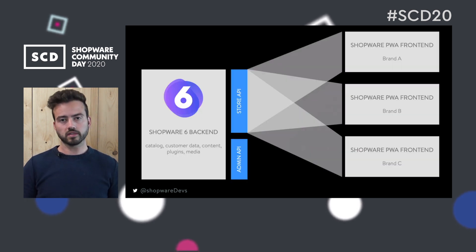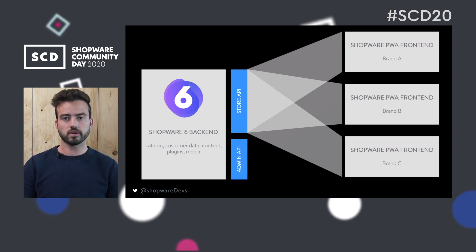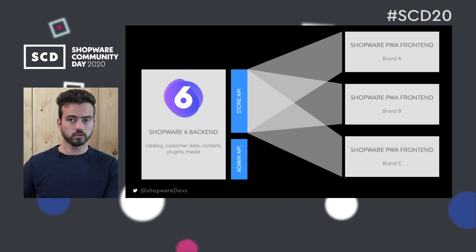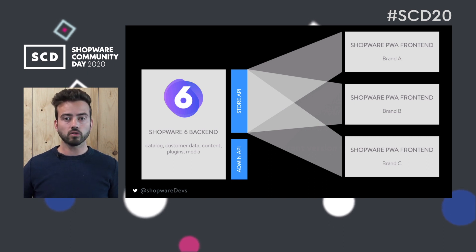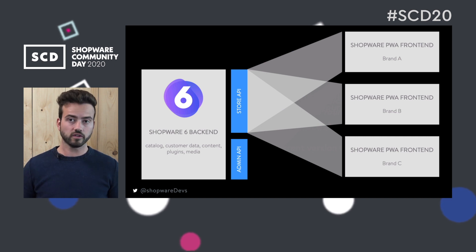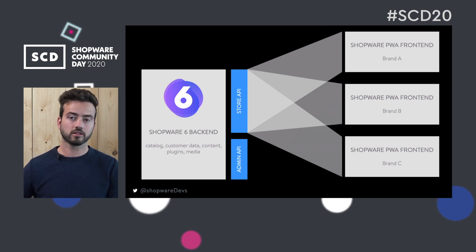Looking at this diagram, we have the Shopware backend on the left side, and on the right side we have multiple storefronts — which might be brand shops, more interactive landing pages, you name it. They're all using the same API and the same backend, and that's perfectly fine because we are completely headless. We can scale independently on the frontend side, which is a pretty cool thing.